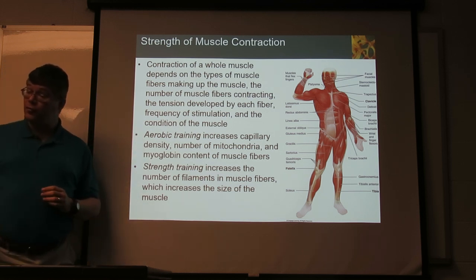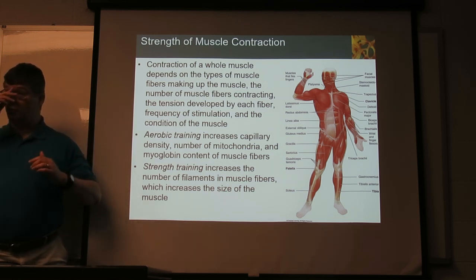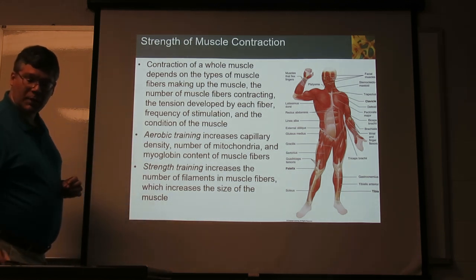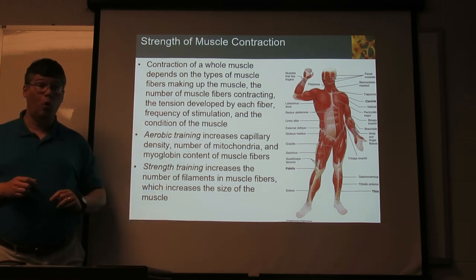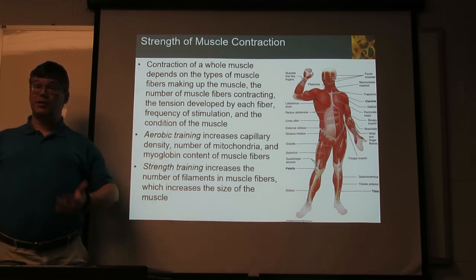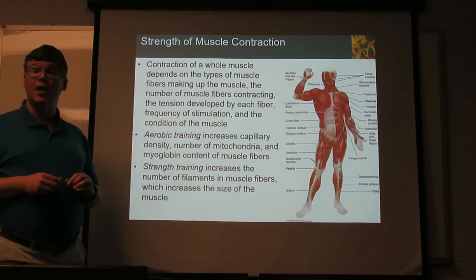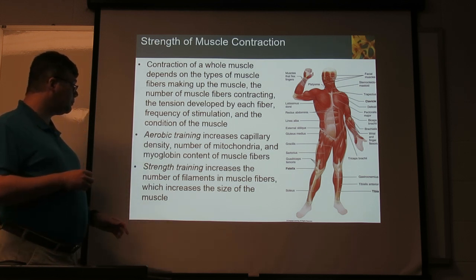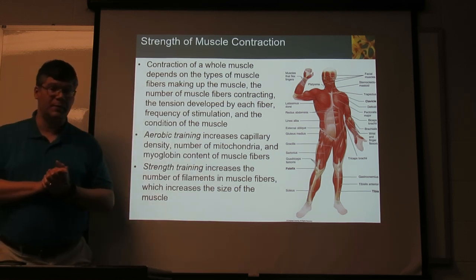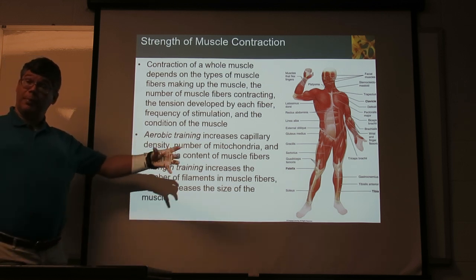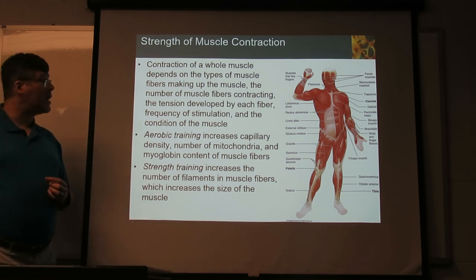Both aerobic and strength training play a role here. Aerobic training tends to build more blood vessel supply to the muscles — more capillaries, the little tiny blood vessels, more mitochondria able to process more sugar faster and make more ATP, and more myoglobin, the protein that takes oxygen from the blood and gets it into the muscle. Strength training helps build more muscle fibers and more filaments per fiber, building up bigger muscles — and that will help you with whatever you use that particular muscle for.